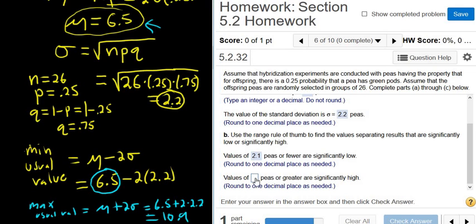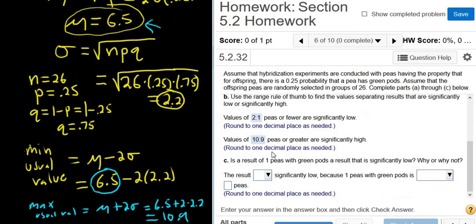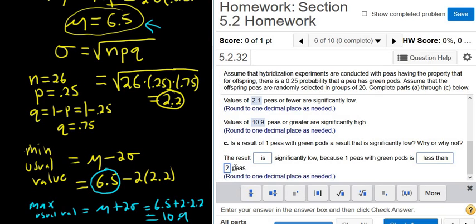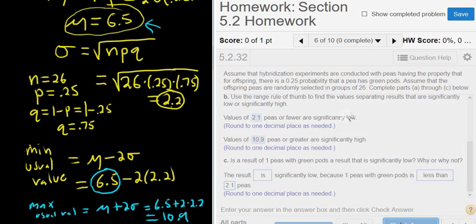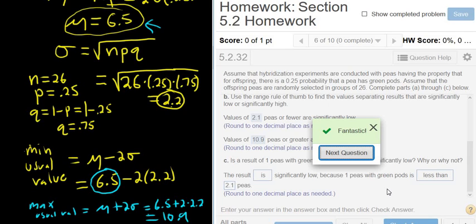So they just want the minimum and maximum usual values in these questions. Is the result of 1 pea with green pods a result that is significantly low? Yes. Yes, because 1 is less than 2.1, so it would be unusual. The result is significantly low because it is less than 2.1 peas. So I hope that made sense.